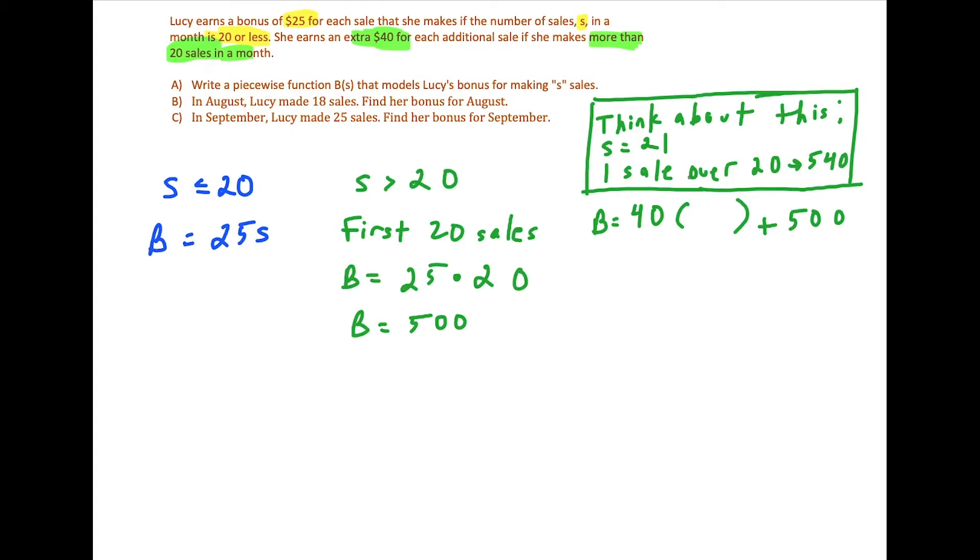So if we think here, what this tells us is that when we plug in S equals 21, we should wind up with 540. So the problem with just writing S here is that S equals 21, 21 times 40 plus 500 is way over 540. So we have to be very careful. So we're going to throw in an S minus 20 here. Because remember what I just said, to think about when we plug in S equals 21, we should get 540. And when we plug in 21, 21 minus 20 is 1. 1 times 40 is 40 plus 500 gives us the 540.